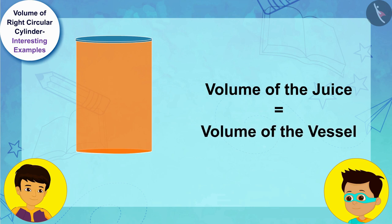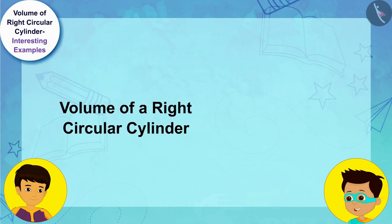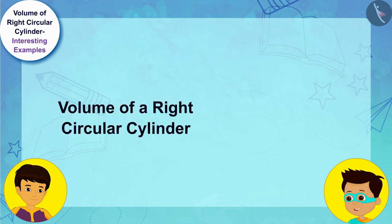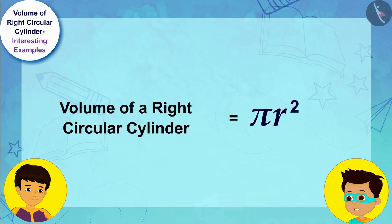And I now remember the formula for the volume of a right circular cylinder very well. The volume of a right circular cylinder is π r² h, where r is the radius of the cylinder's base and h is its height.